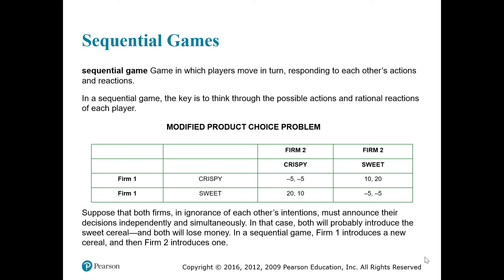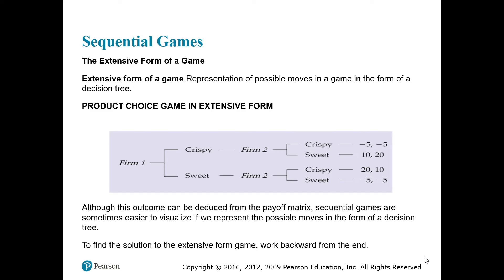Suppose that both firms, in ignorance of each other's intentions, must announce their decisions independently and simultaneously. In that case, both will probably introduce the sweet cereal and both will lose money. In a sequential game, firm one introduces a new cereal and then firm two introduces one. Sequential games are normally represented by a tree graph or extensive form of game.